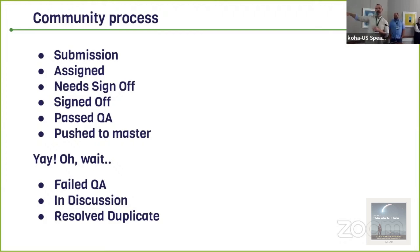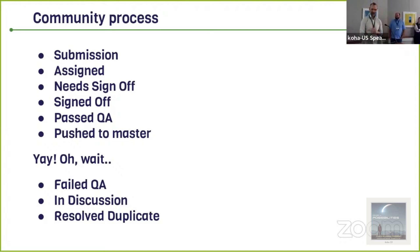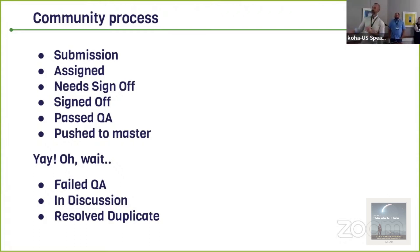The last status I wanted to mention, in case you see it in Bugzilla, is resolved duplicate. Just because your bug is resolved doesn't mean it's fixed — sometimes it's a duplicate of another bug that is further back in the statuses. That's the process a bug goes through in the community.